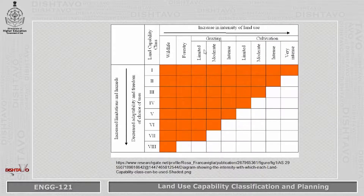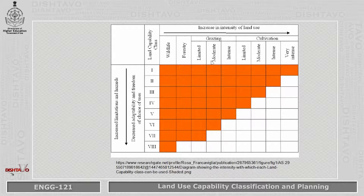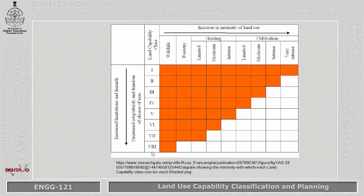As shown in this chart, there are 8 land capability classes — class 1 through class 8. The uses of this land are given: wildlife, forestry, then limited grazing, moderate grazing, and cultivation. Class 1 land is suitable for all purposes, from cultivation and grazing to wildlife. But if you consider class 8, it is only suitable for wildlife — it is not suitable even for grazing and cultivation.